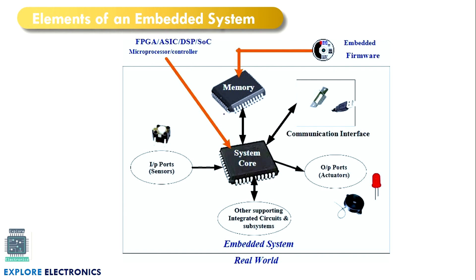Now let us understand what are the elements of an embedded system. An embedded system has hardware as well as firmware, meaning software. The main thing is we have a system core — the heart of the embedded system — which can be a microprocessor or a microcontroller. This is what we call the processing device. Different types include FPGA (field programmable gate array), ASIC (application-specific integrated circuit), a digital signal processing unit, or a system-on-chip (SoC).